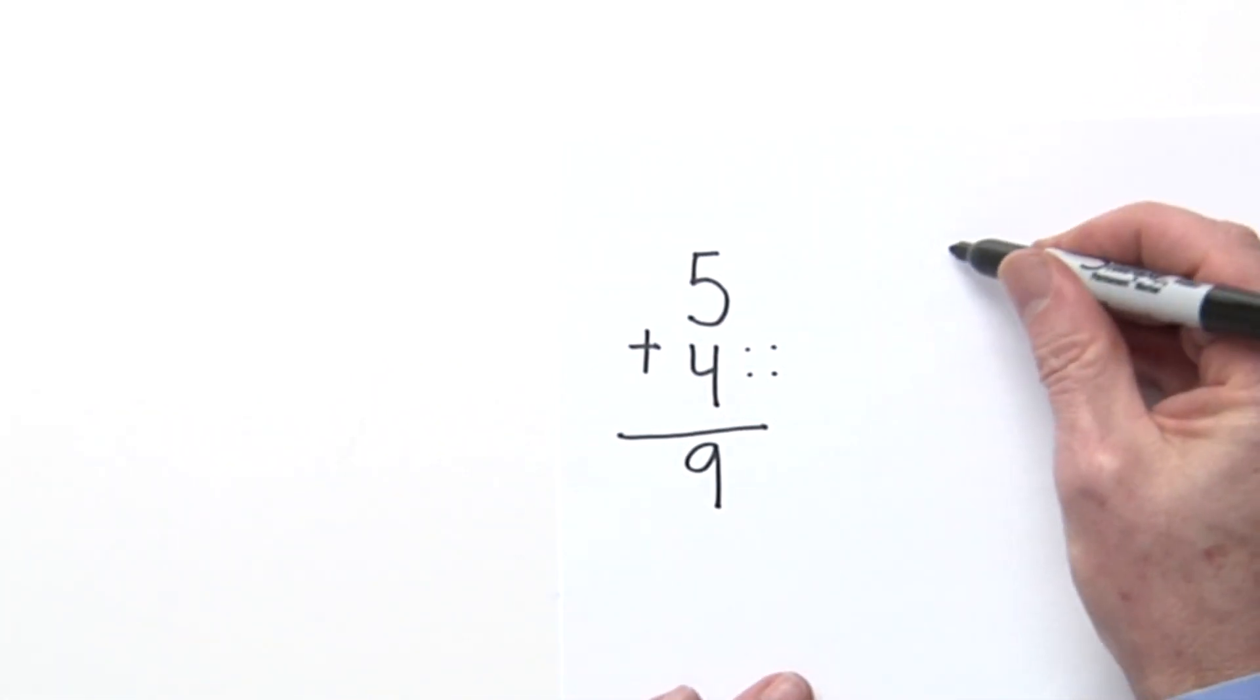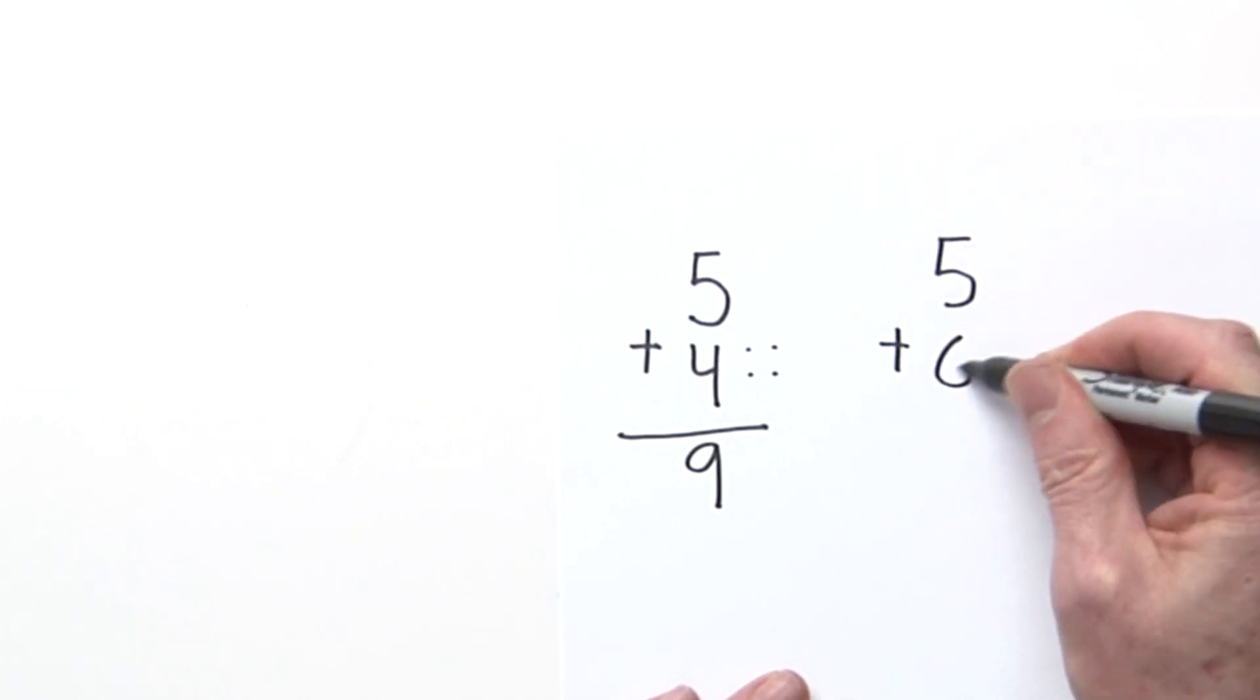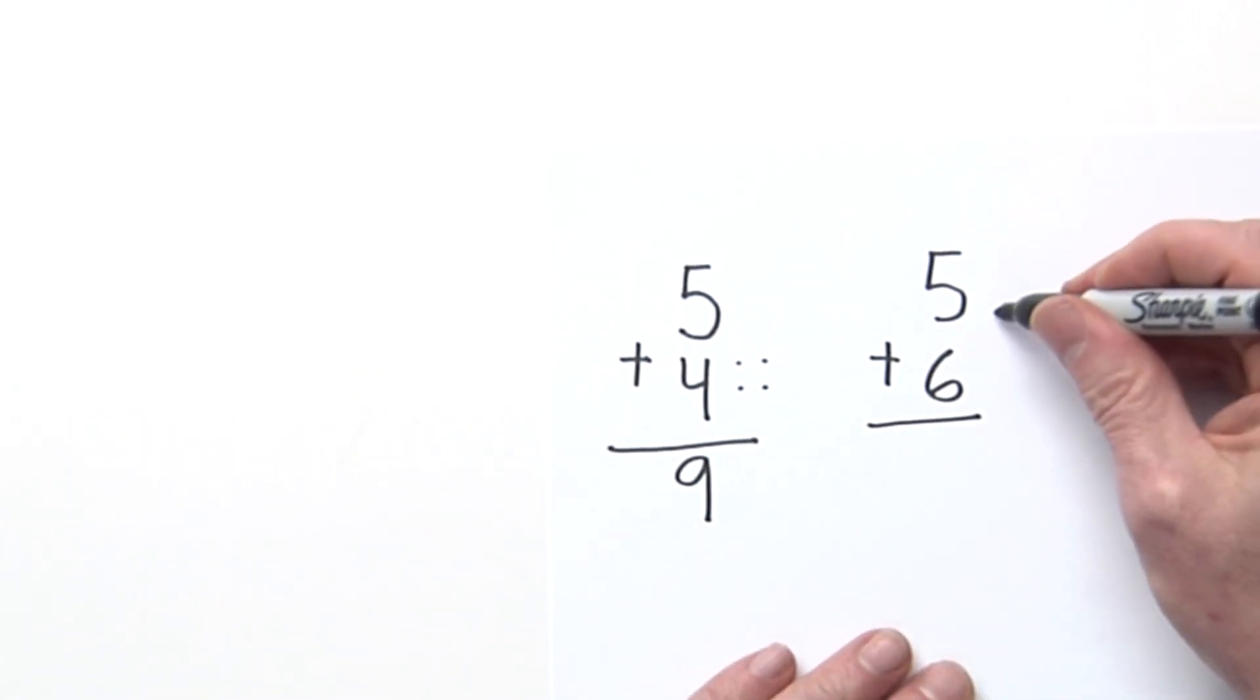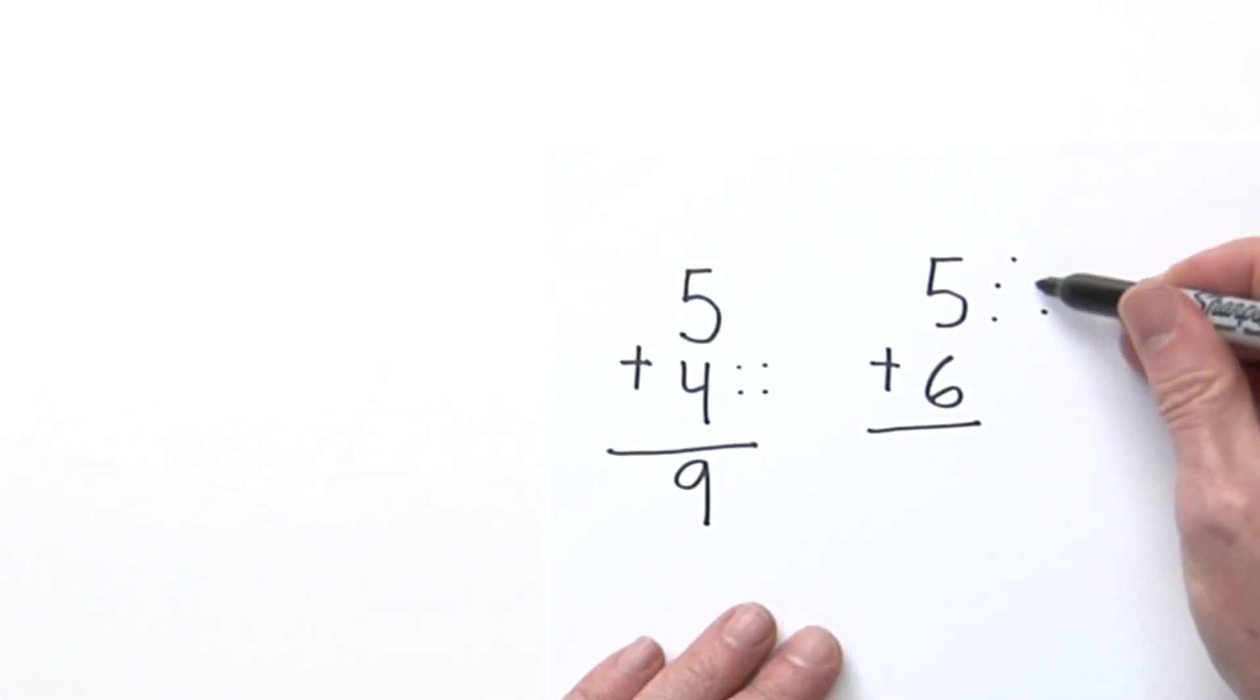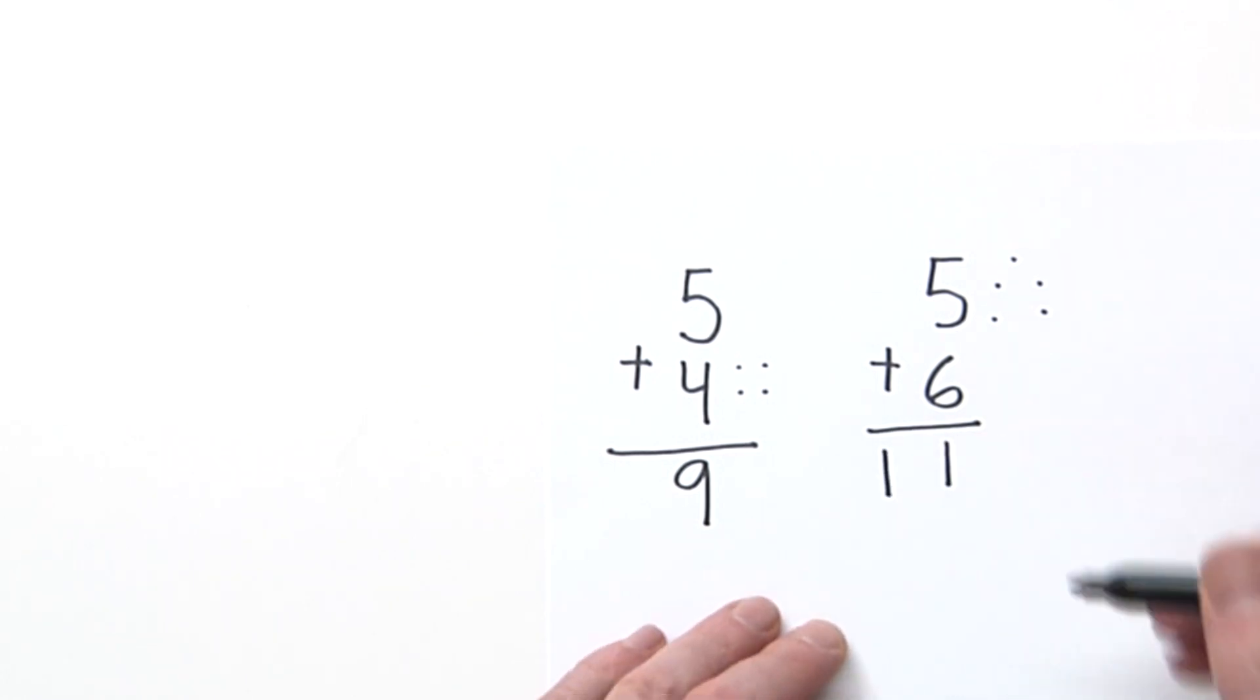Let's do a bigger number. Let's do 5 plus 6. Once again, I'm going to add the bigger number first. I like to put dots down - it's kind of easier for me to add that way. So I have 6, 7, 8, 9, 10, 11. So now I have a double-digit answer, which is 11.